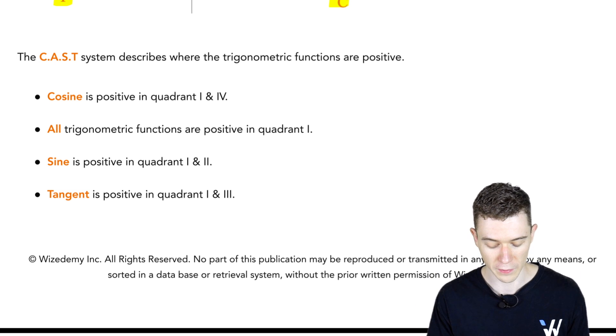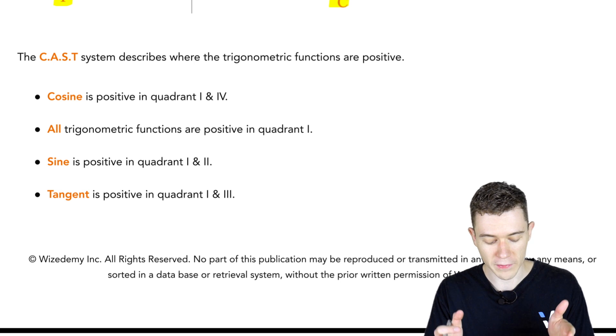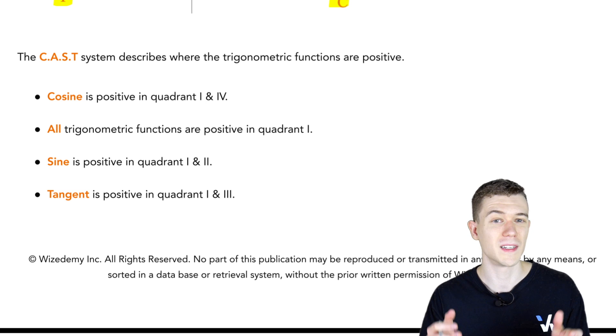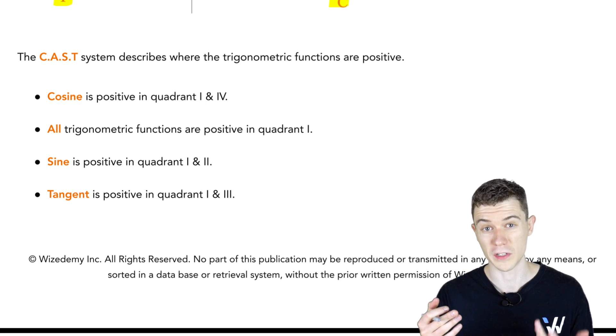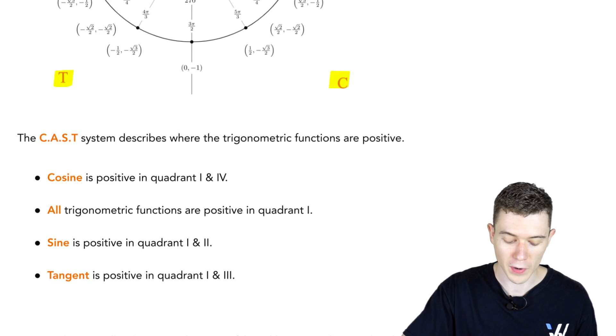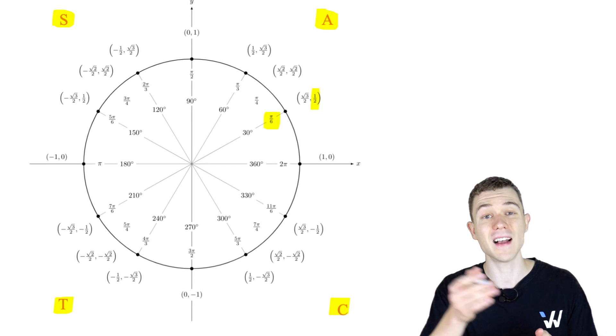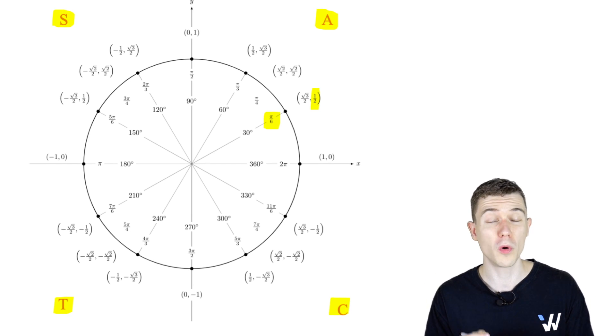Cosine is positive in the first and fourth quadrants. All the trig values are positive in the first quadrant. Sine is positive in the first and second quadrant. Tangent is positive in the first and third quadrant. I would recommend remembering this rule, setting it up like this, CAST reading counterclockwise, or all students take calculus reading counterclockwise.